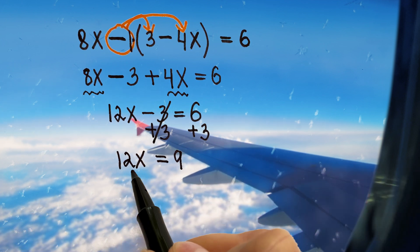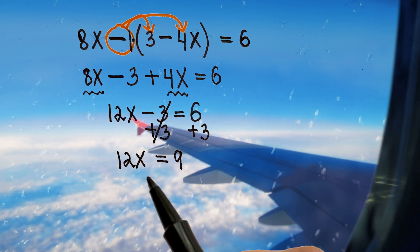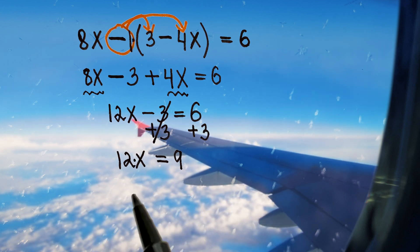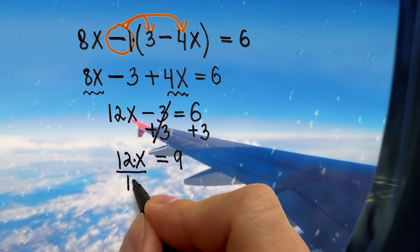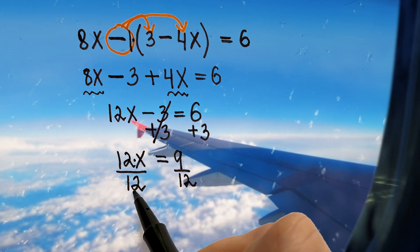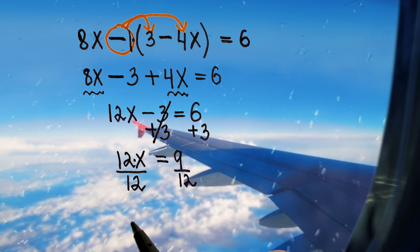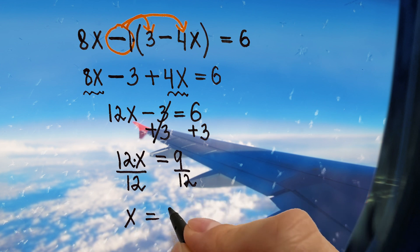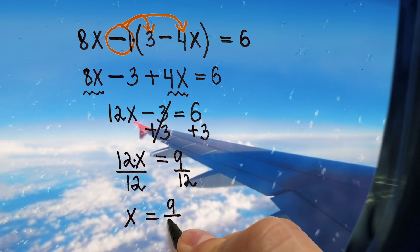To get x all by itself we need to get rid of this 12. Here we are multiplying x by 12 so we will do the opposite. We will divide both sides by 12. 12x divided by 12 will be 1x, exactly what we need, and it looks like we are going to have a fraction so x equals 9/12.